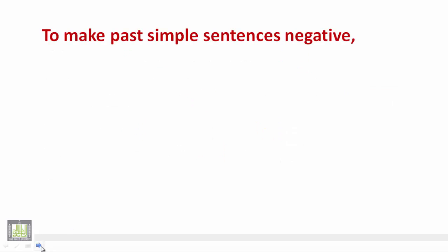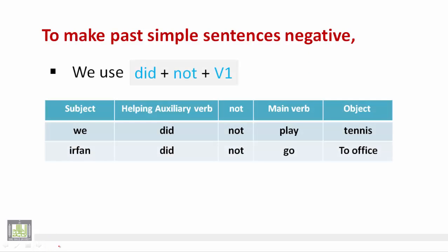If you want to make these sentences negative, we do the following: we use 'did' as an auxiliary verb plus 'not', and we change the verb into its base form. إذن حيثما صادفنا فعلاً في الزمن الماضي البسيط نستخدم 'did' كفعل مساعد متبوعاً بـ 'not'، ونقوم بإعادة الفعل إلى شكله الأصلي إذ أنه كان في الصورة الثانية أو التصريف الثاني.